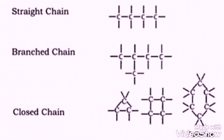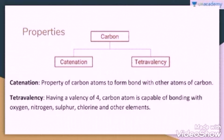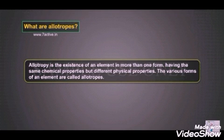Carbon has one more property called catenation. When carbon shares electrons with itself to form a compound, it is called catenation. This self-linking property of carbon forms straight chain compounds, branched chain, or closed chain compounds. These two properties, tetravalency and catenation, help carbon to form a huge number of compounds.